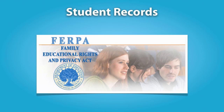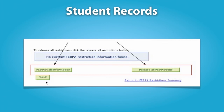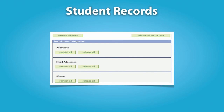Generally, schools must have written permission from the parent or an eligible student in order to release any information from a student's education record. However, FERPA allows schools to disclose those records without consent to certain parties, including school officials with a legitimate educational interest, other schools to which a student is transferring, to comply with a judicial order or lawfully issued subpoena, and appropriate officials in cases of health and safety emergencies. Schools may also disclose without consent so-called directory information, such as a student's name, address, telephone number, date of birth, honors and awards, and dates of attendance. However, schools must tell parents and eligible students about directory information and allow them a reasonable amount of time to request that the school not disclose directory information about them.